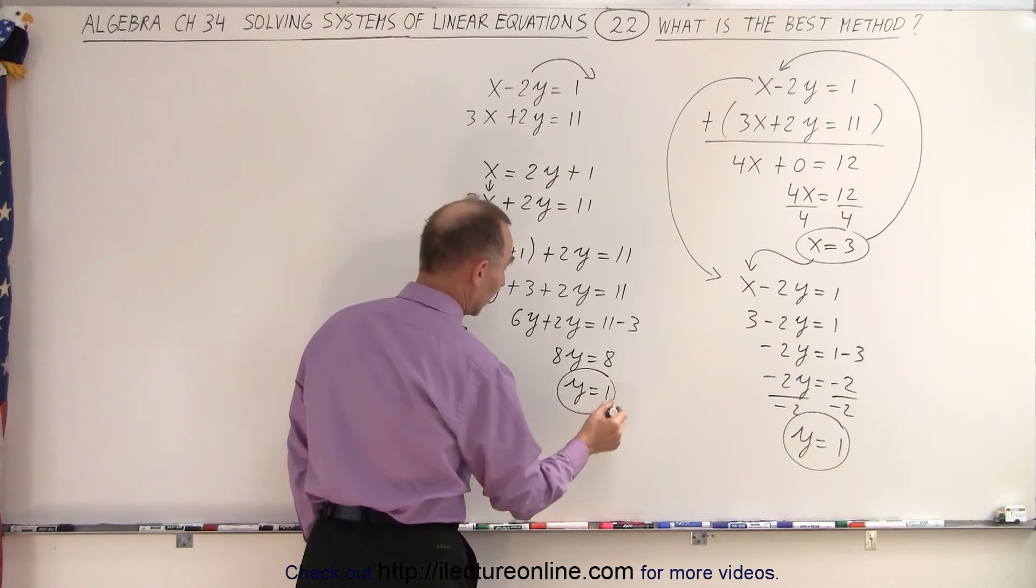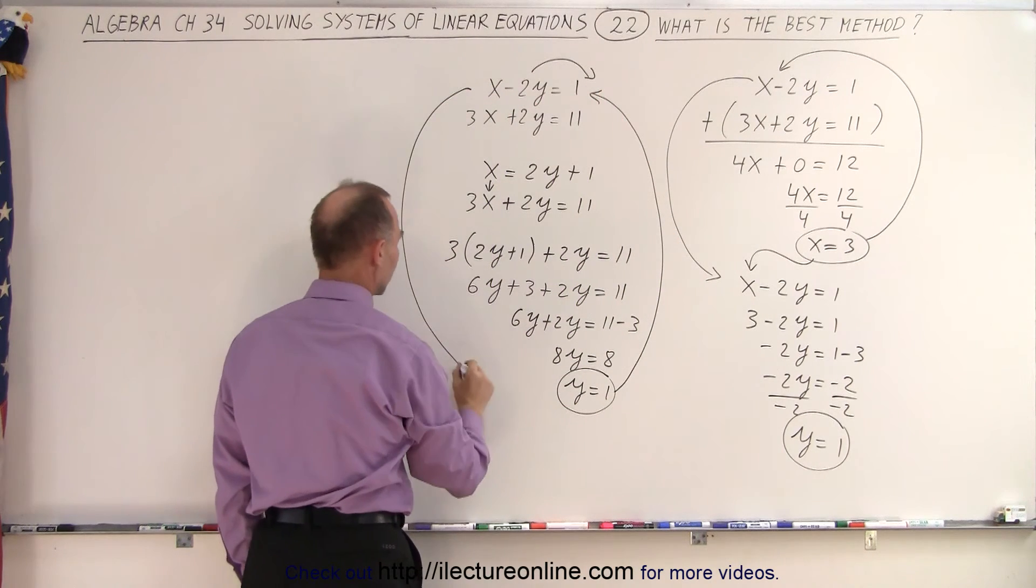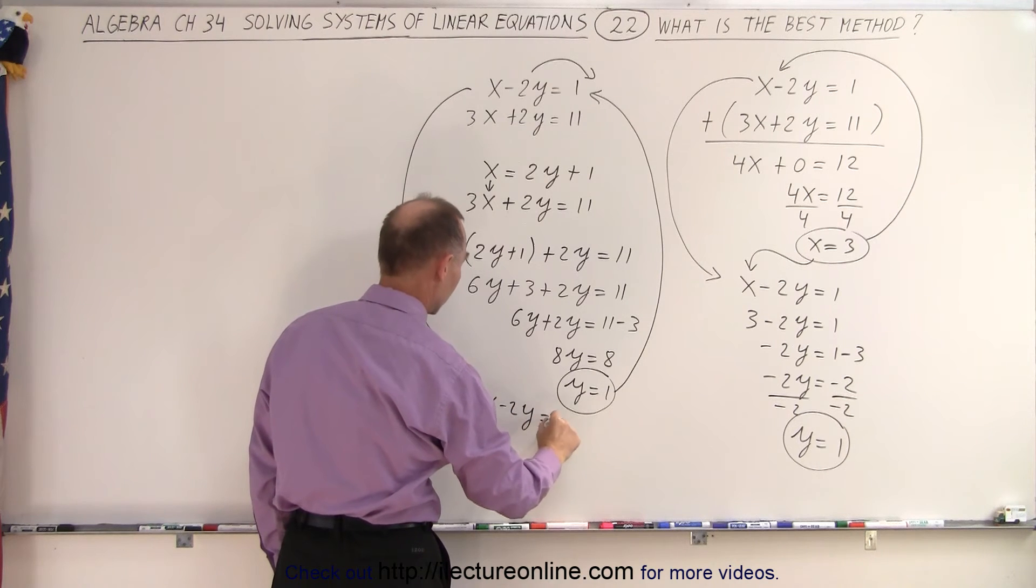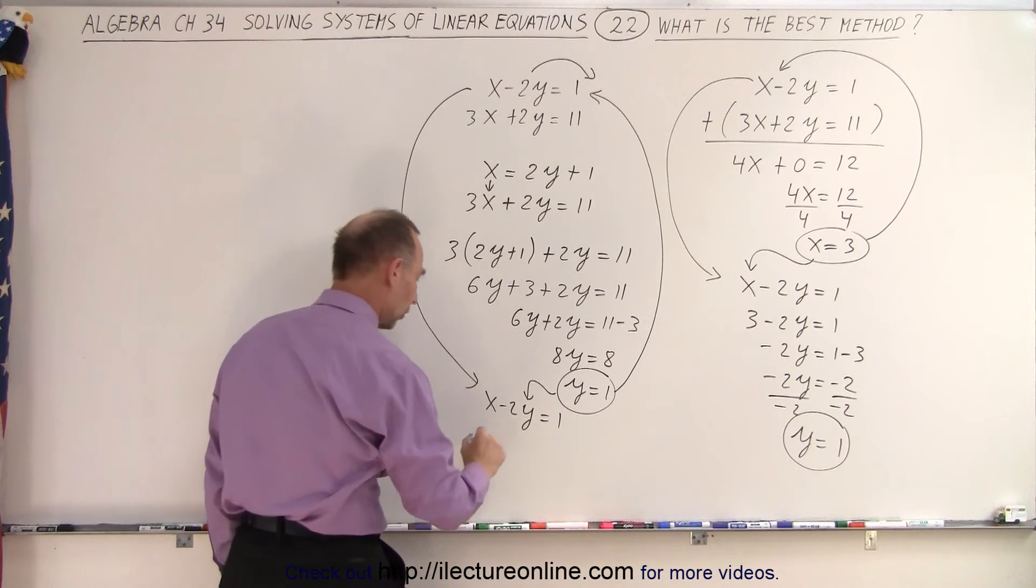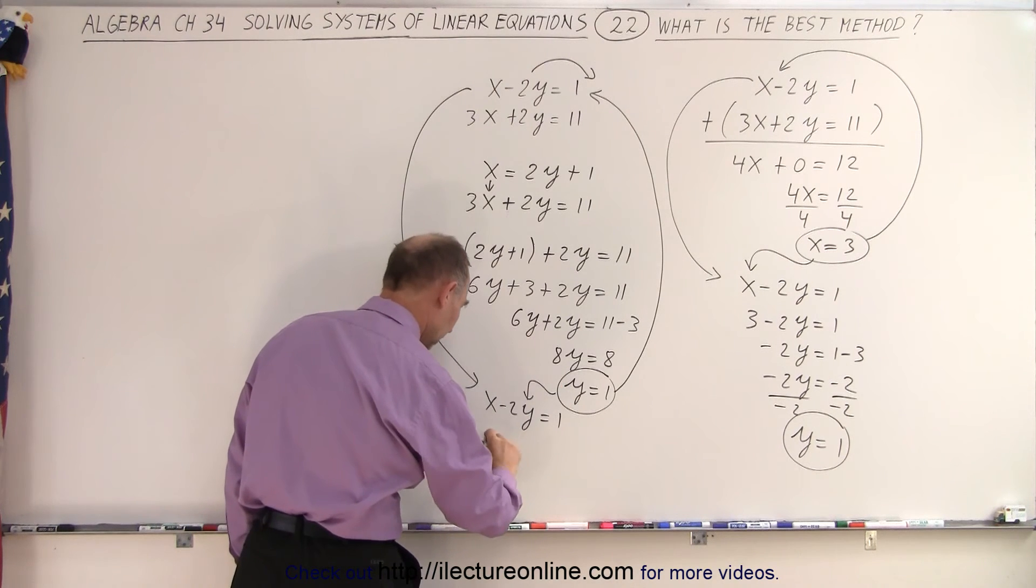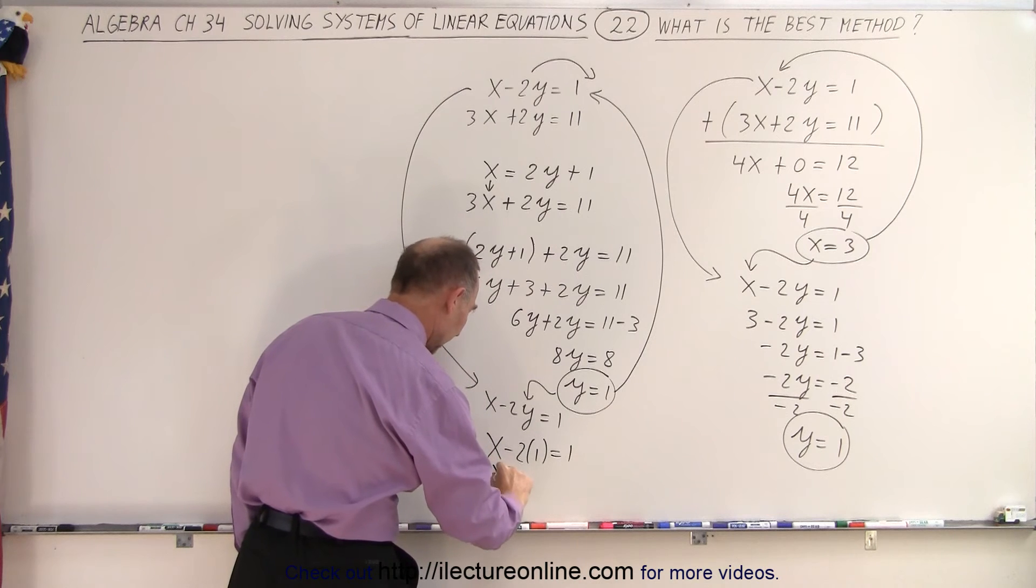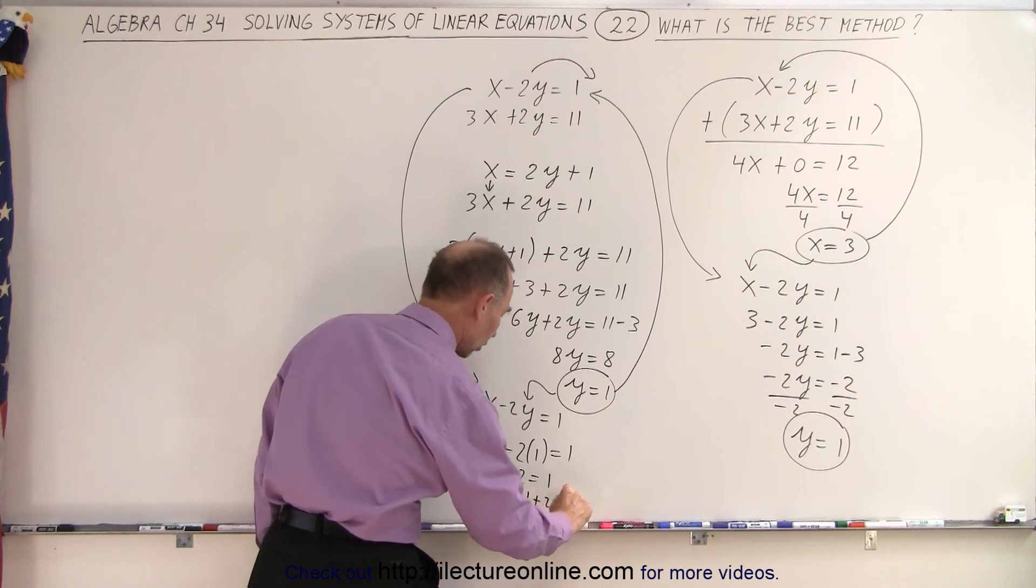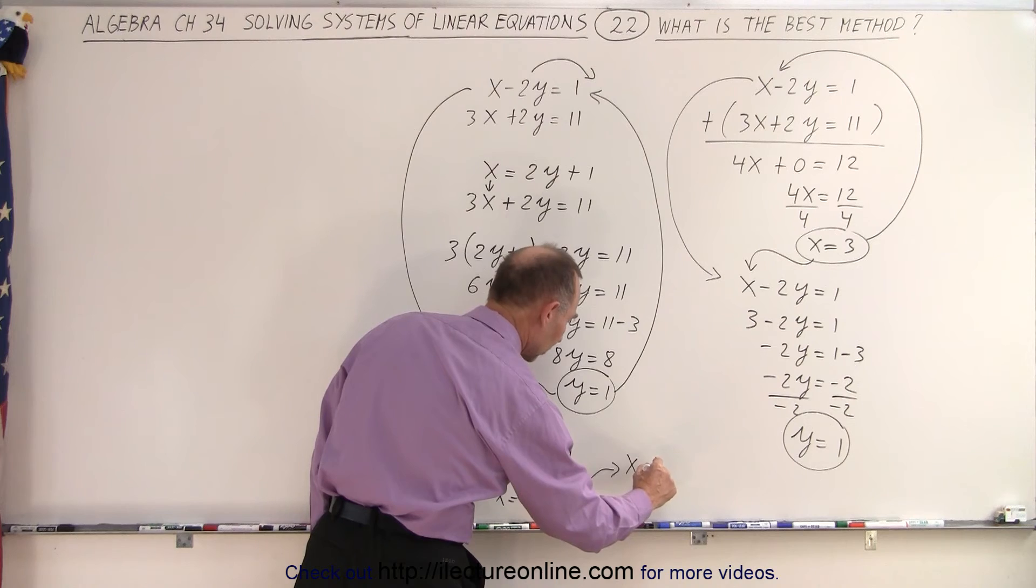And then I take that and plug that back into one of my two equations. Let's take the top equation. x minus 2y equals 1. So we're going to plug the 1 equal for, we said y equal to 1. So x minus 2 times 1 equals 1. x minus 2 equals 1. x is equal to 1 plus 2. So we can say that x is equal to 3. That should be 3. There we go.